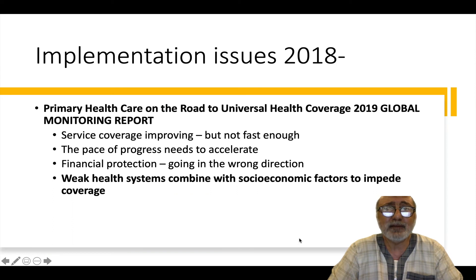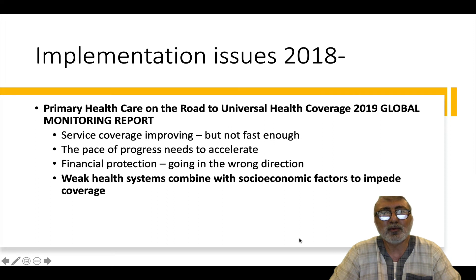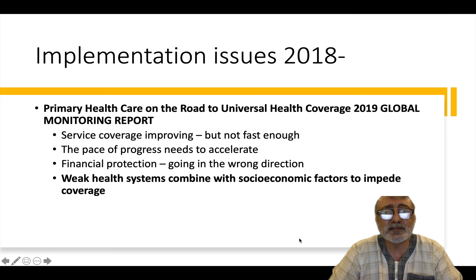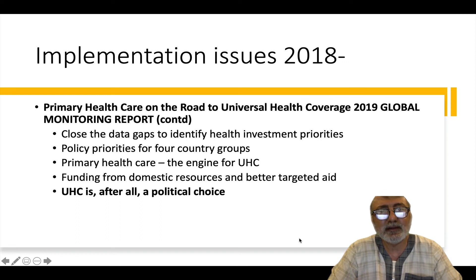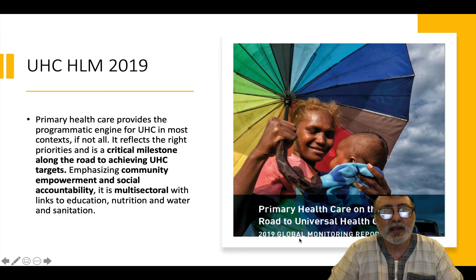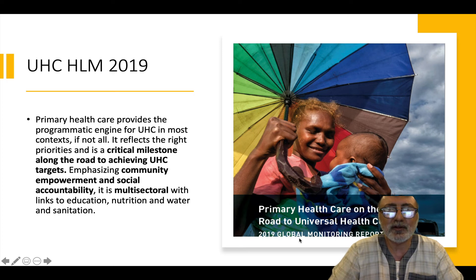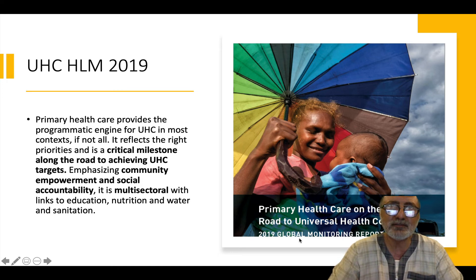In terms of implementation since 2018, a WHO report in 2019 says that we are struggling, largely because of weak health systems combined with socioeconomic factors impeding coverage. Inequity is the core problem — resulting from people's socioeconomic determinants of health and the actual primary health care plans in country. The report ends by saying that UHC and PHC is a political choice. There was also a high-level meeting in 2019 which brought together everyone around universal coverage, with primary health care seen as a critical milestone to achieving UHC.